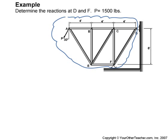At F you can see that we have a rocker, so that means we have only one unknown here, and that's F_Y. Over at D we have our pin, and I'm going to assume D_X is to the right and I'll assume D_Y is up.